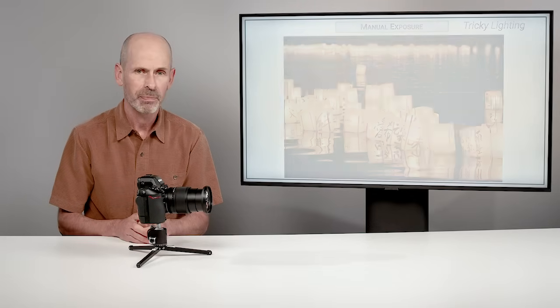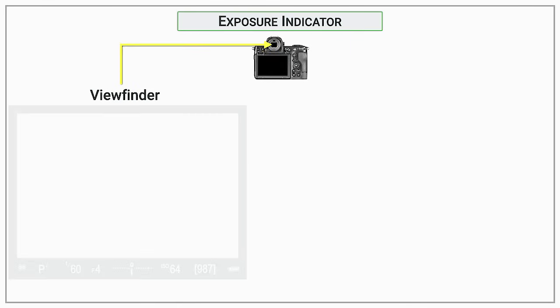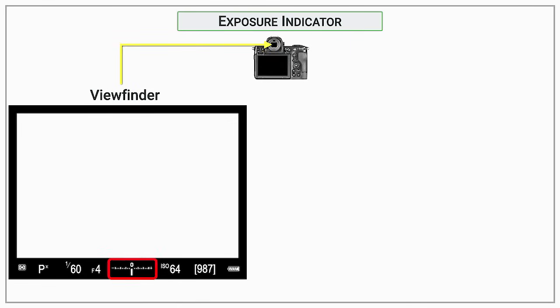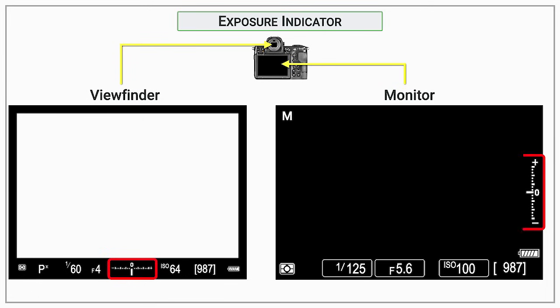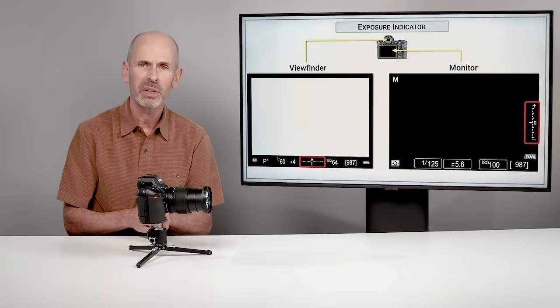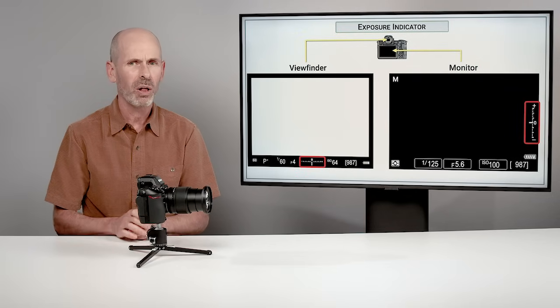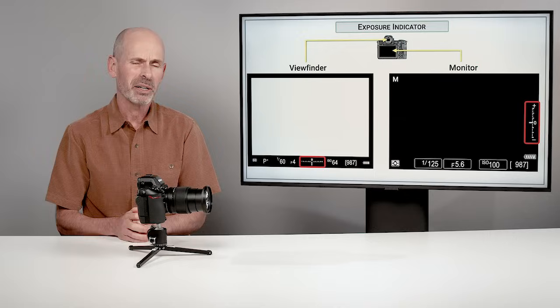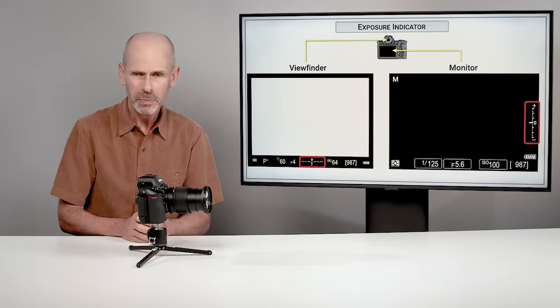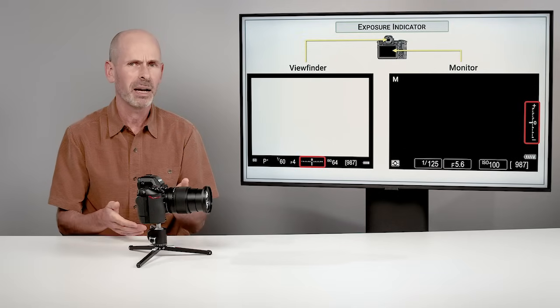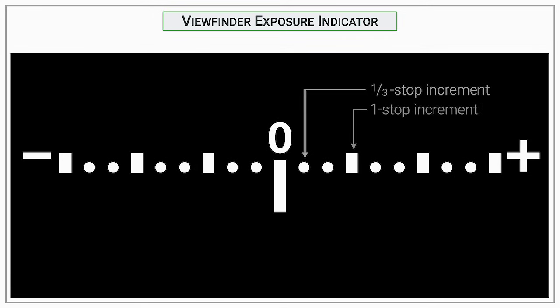Manual is also great for scenes of extreme brightness or darkness where the metering system may struggle. I like to dial it in exactly where I want it and get consistent quality shots no matter how tricky the lighting. In manual, you work with the exposure indicator — a graph at the bottom of the viewfinder or on the right-hand side of the monitor. Nikon traditionally puts it on the right, which is a hallmark of high-end cameras.